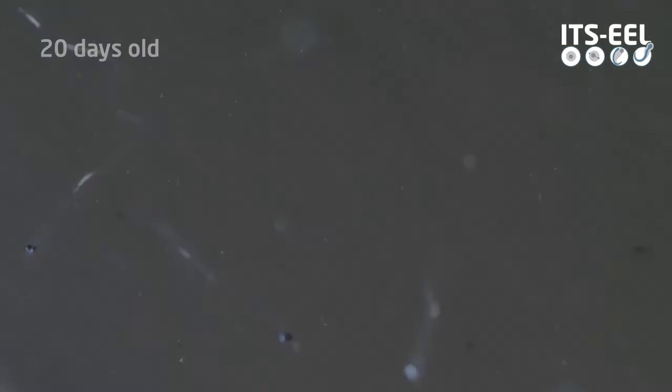During the past 15 years, larval culture has made a leap both in terms of production and survival. Now, thousands of larvae successfully enter the feeding stage, where they start developing a leaf-like shape, leading to the so-called leptocephalus stage.